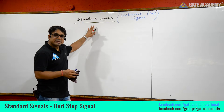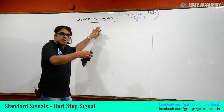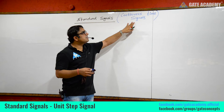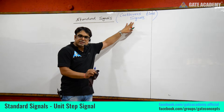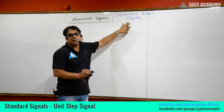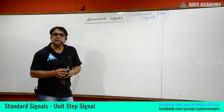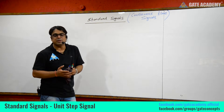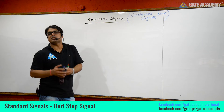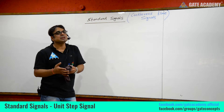Here we are talking about standard signals, which will be used in many places. In standard signals, we will learn all the signals in the continuous time domain, and then we will talk about standard signals in the discrete time domain. The signals we are going to study include: step signal, rectangular signal, impulse signal, triangular signal, exponential signal, ramp signal, and sinc function.